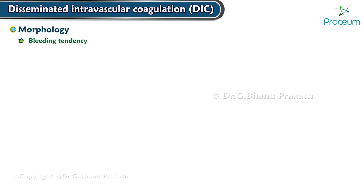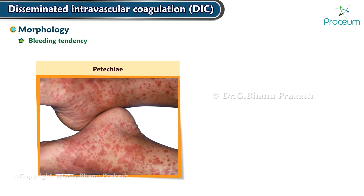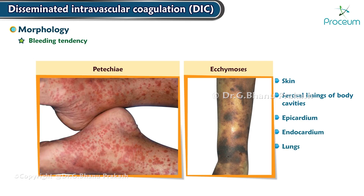The bleeding tendency in DIC may be manifested as larger-than-expected hemorrhages near foci of infarction, diffuse petechiae and ecchymosis on the skin, serous linings of the body cavities, epicardium, endocardium, lungs, and mucosal lining of the urinary tract.